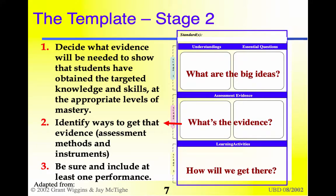Stage two: you decide what evidence will be needed to show that the students have obtained the targeted knowledge and skills at the appropriate levels of mastery — in other words, how are you going to know if they learned it? You identify ways to get that evidence through assessment methods and instruments, and be sure to include at least one performance, because if there are skills involved, students will need to demonstrate those skills.